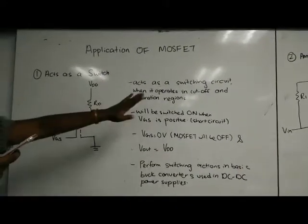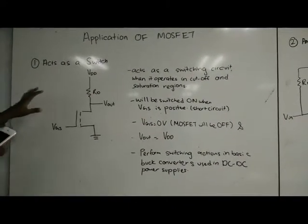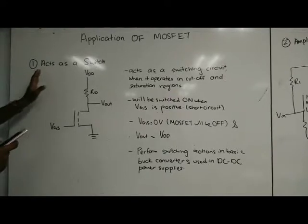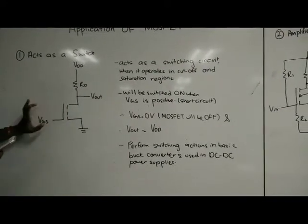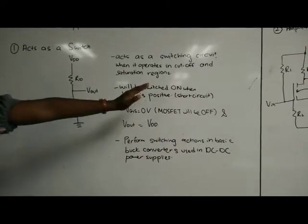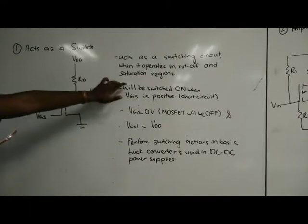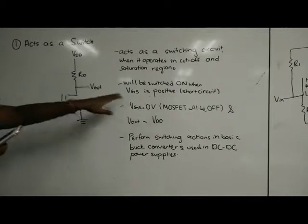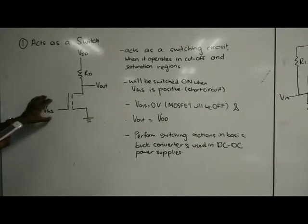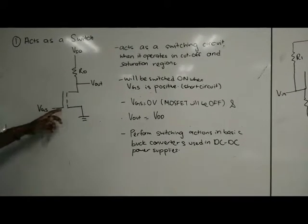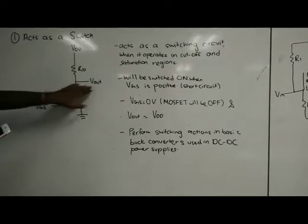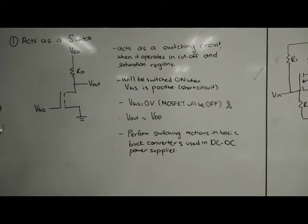Now about applications of MOSFET. MOSFET acts as a switch - this is the example of the schematic diagram. It can act as a switching circuit when it operates in cutoff and saturation regions. It will be switched on when the gate voltage is positive because it acts as a short circuit.